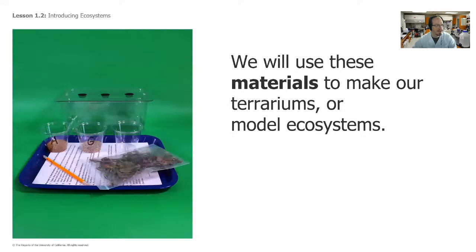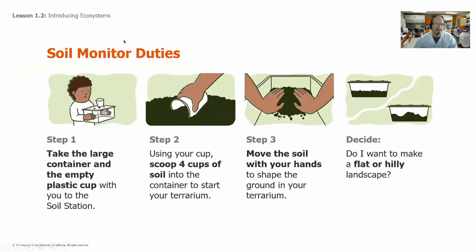We're going to use these materials to make our terrariums. We have a box with holes in the top to let air and water in and out. There's going to be some leaf litter — which helps the soil maintain moisture. We're also going to have alfalfa seeds, grass seeds, and some nutrient-rich soil.